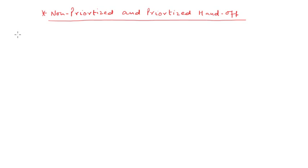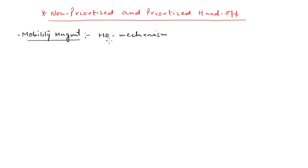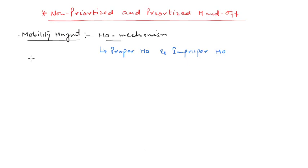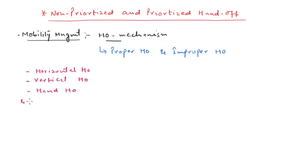In the previous lecture we studied about mobility management, and in mobility management we studied about the handoff mechanism. Handoff mechanism is used to handle the mobility of a mobile user in a cellular system. Depending on different situations, this handoff can be categorized as proper handoff and improper handoff, and we studied different types of handoffs: horizontal handoff, vertical handoff, hard handoff, and soft handoff.